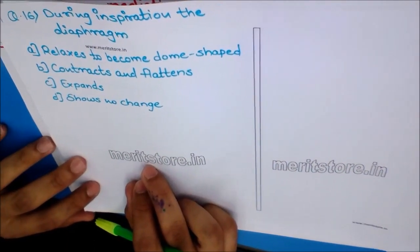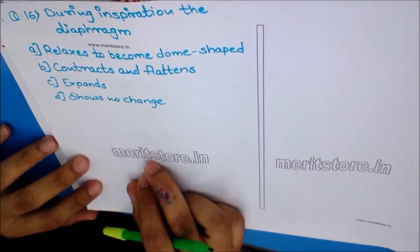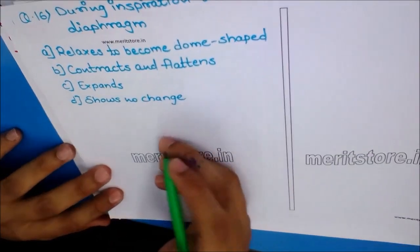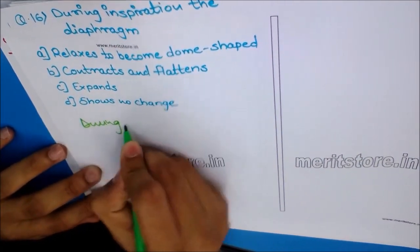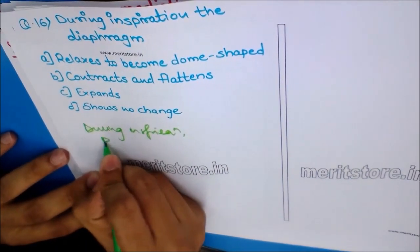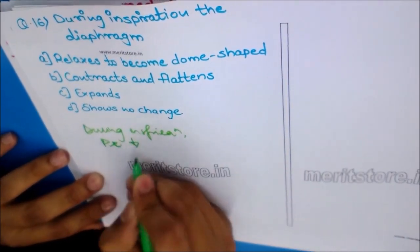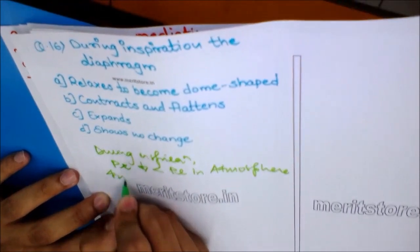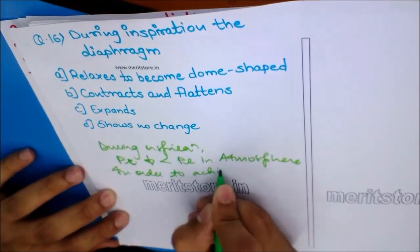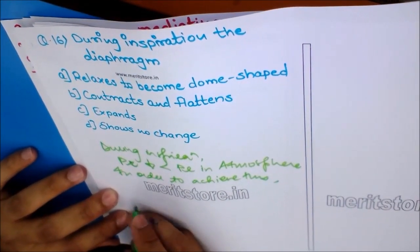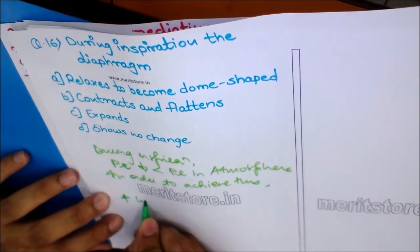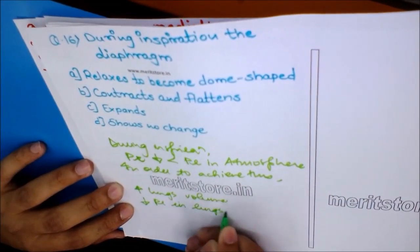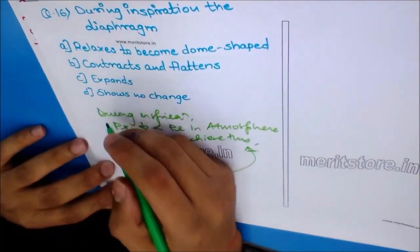Question 16: During inspiration, the diaphragm? Options: A) Relaxes to become dome shaped, B) Contracts and flattens, C) Expands, D) Shows no change. During inspiration, pressure inside the lungs must be lower than atmospheric pressure. To achieve this, the diaphragm contracts and flattens, increasing the volume of the lungs, which decreases the pressure inside — thereby enabling inspiration. The answer is option B.